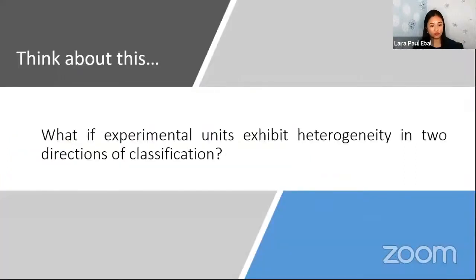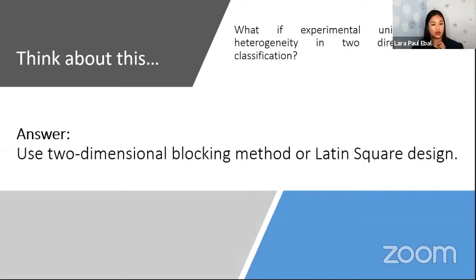So what if experimental units exhibit heterogeneity into directions of classifications? You have to think. In the RCBD, we only consider one blocking factor. How about now if we consider two blocking factors? This is the question. Now, the answer is, use two-dimensional blocking factor or we call it Latin square design.